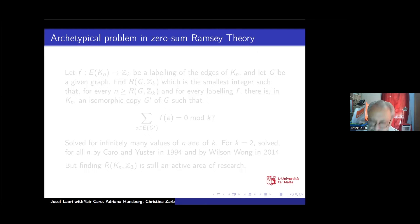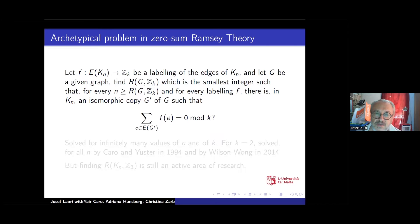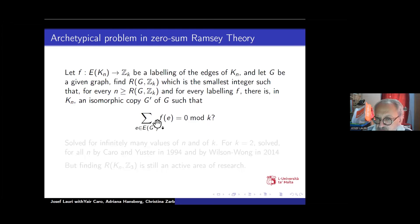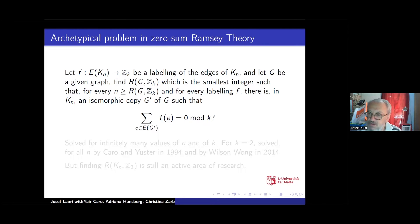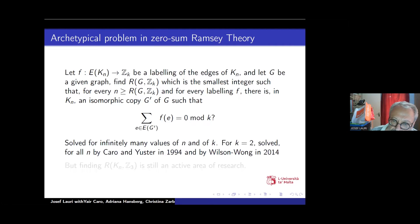The archetypical problem in zero-sum Ramsey theory is roughly this: let the edges of the complete graph be labeled with elements of an abelian group — most commonly the cyclic group — and find the smallest n such that from that point onwards, whatever labeling you give to the edges, you will find an isomorphic copy of a given graph whose edge-label sum is zero mod k.